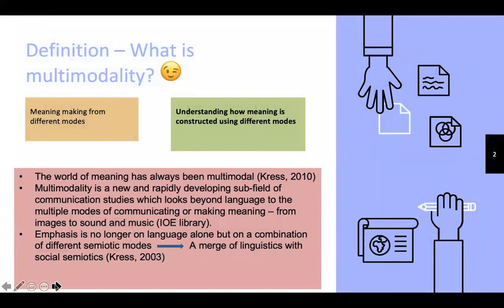In our social semiotics lesson, we talk about signs which have meanings. There are different types of signs, and the types of signs are what we call sociosemiotic modes. So understanding how meaning is constructed using different modes is what we call multimodality.